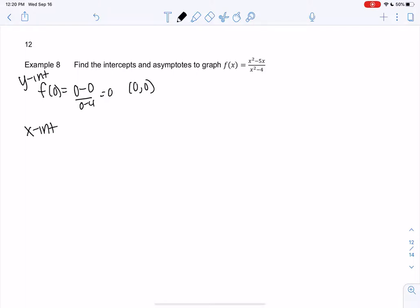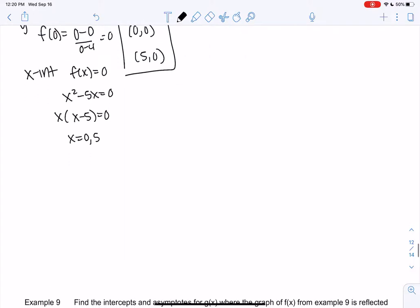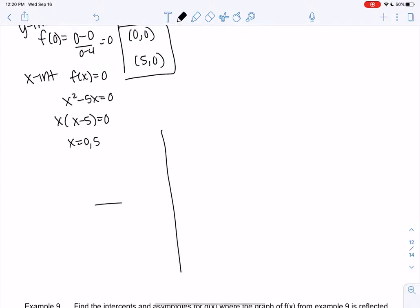X-intercepts are when the function equals zero, which for rational is when the numerator equals zero. So x times (x - 5), we get x equals 0 and 5, so the other one would be (5,0). I'll just put a graph here that we can slowly fill in. We have two intercepts.